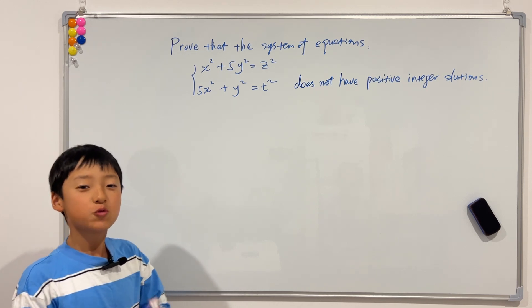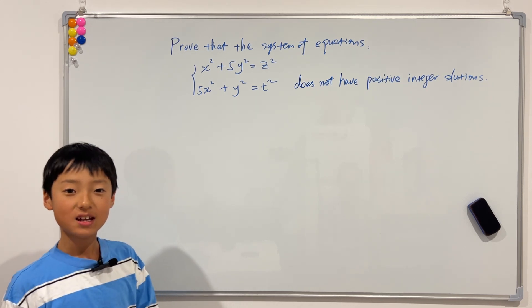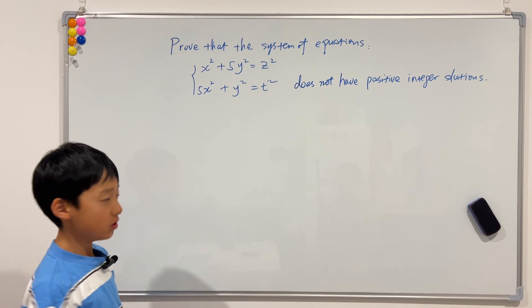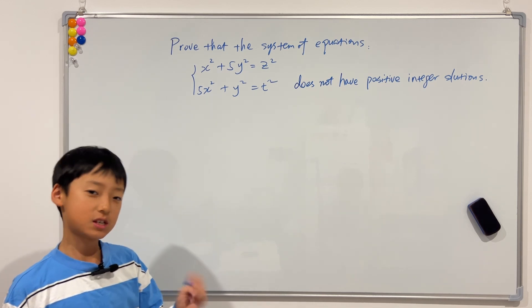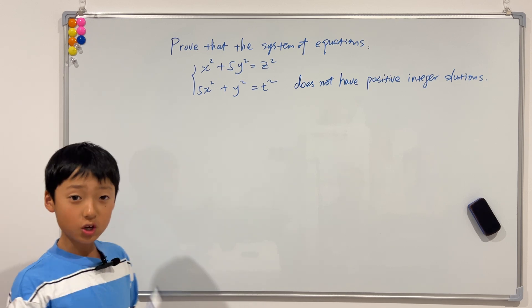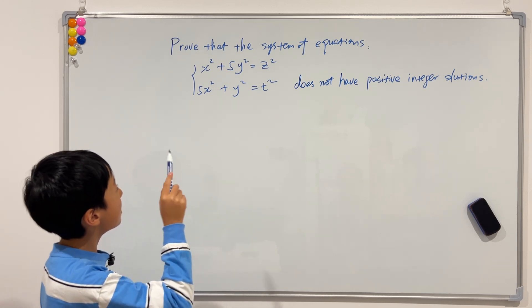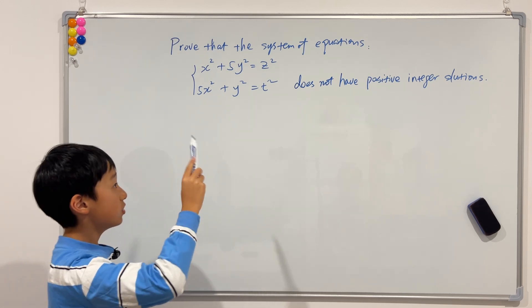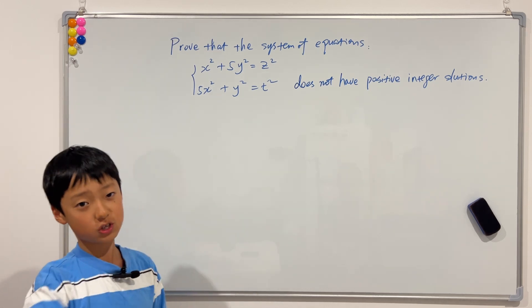Hi guys, welcome back to another video of me teaching. Today I have this system of equations for you. This question asks us to prove that the system of equations does not have any positive integer solutions.